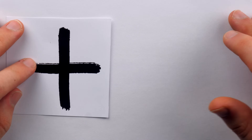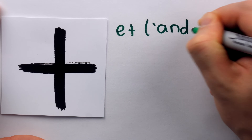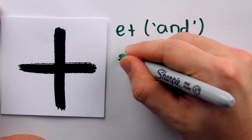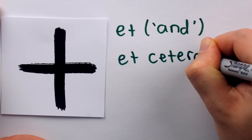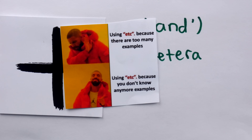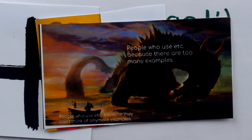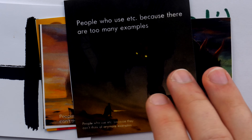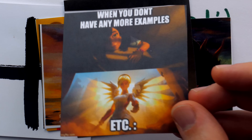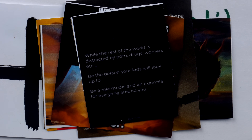So where did our plus sign come from? It's believed to have come from the Latin word 'et,' a conjunction meaning 'and' — which of course makes sense in the context of addition. You may particularly recognize it from the phrase 'et cetera,' which means 'and other similar things' placed at the end of a list. The plus sign derived from 'et' was used in various forms leading up to the 16th century.